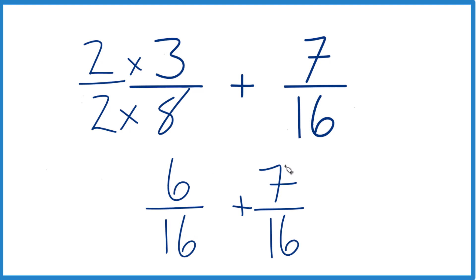Same denominator, add the numerators, six plus seven is 13, and then we just bring the denominator across 16.